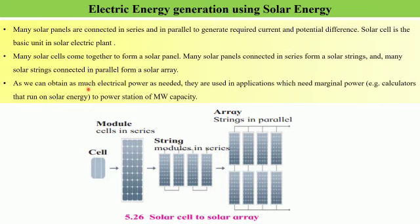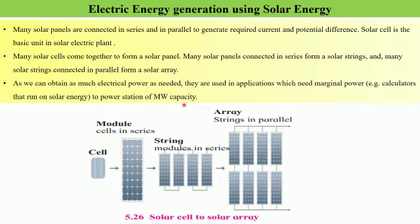Since we can obtain as much electrical power as needed, solar cells are used in applications ranging from marginal power needs — such as calculators that run on solar energy — all the way to power stations of megawatt capacity. By connecting many solar panels in series and parallel combination, we can get the required current and potential difference, enabling very varied applications from small instruments to large-scale megawatt electrical energy production.